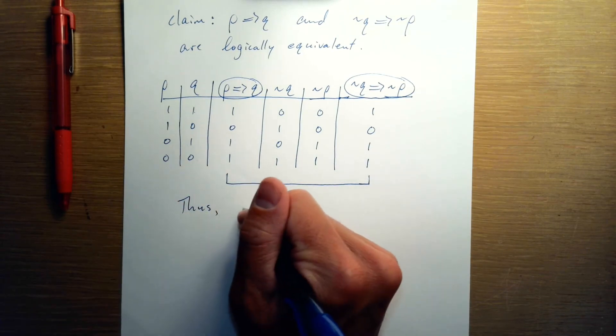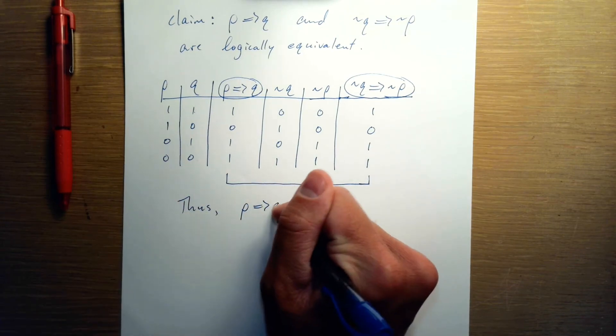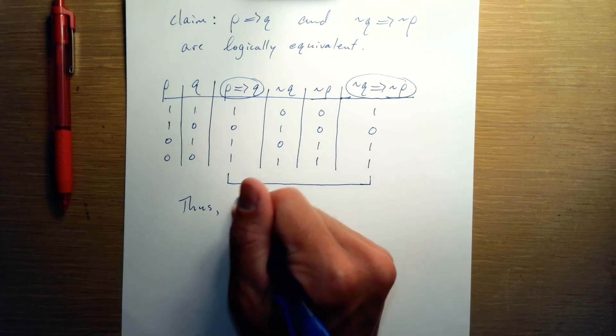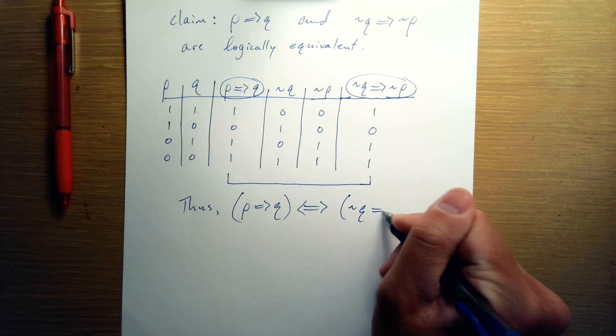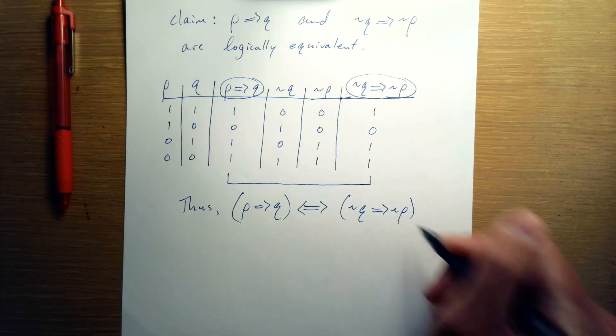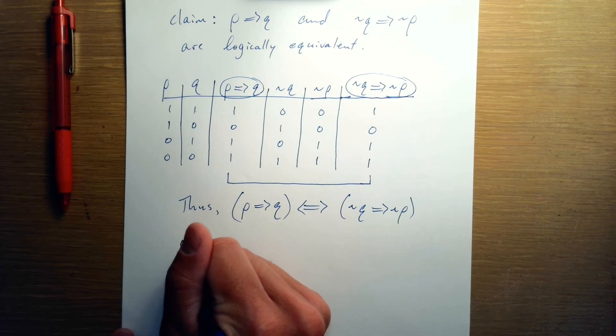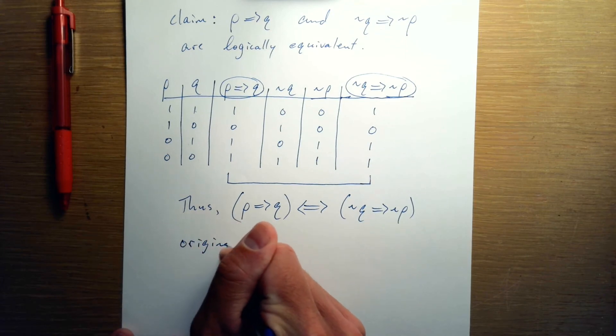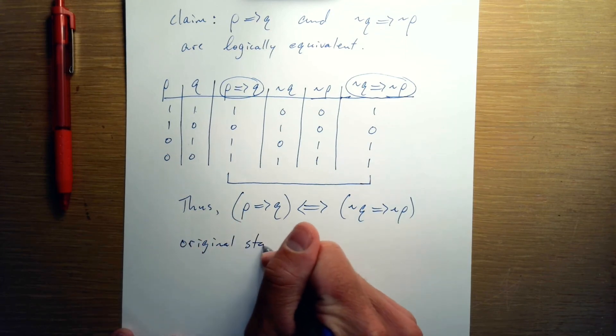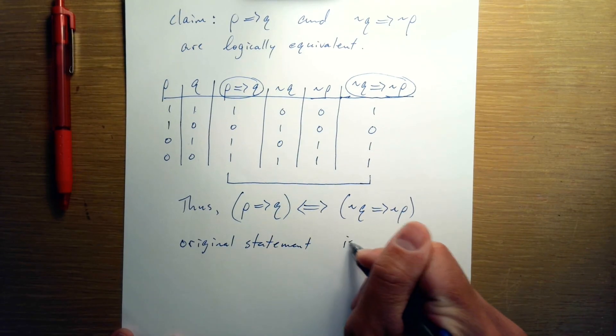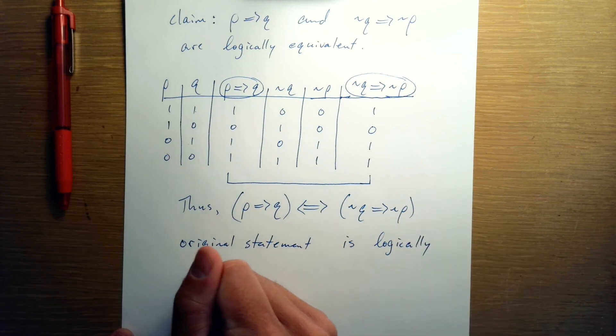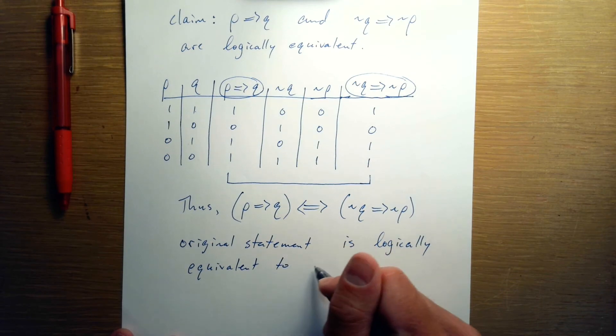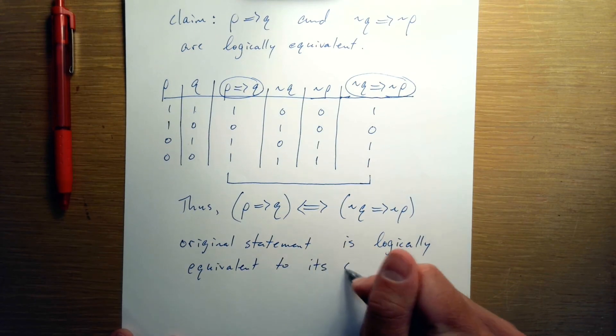Thus, our conclusion is P implies Q is logically equivalent to NOT Q implies NOT P. Or an easier way to remember this is that the original statement, if it's a conditional statement, is logically equivalent to its contrapositive.